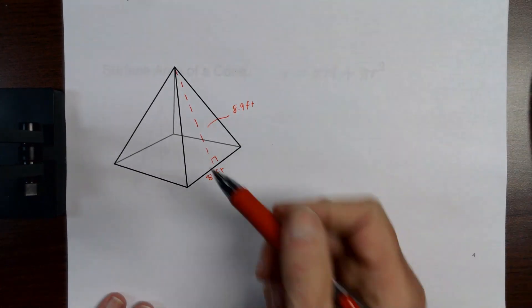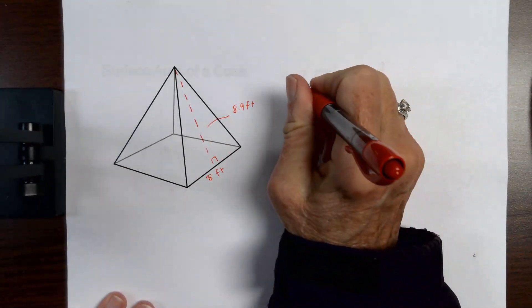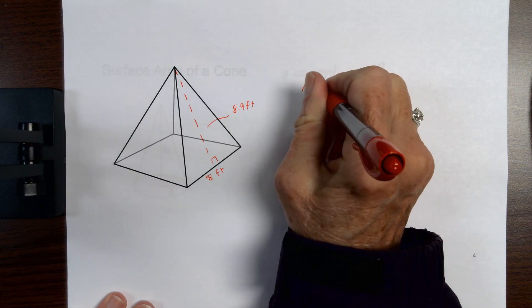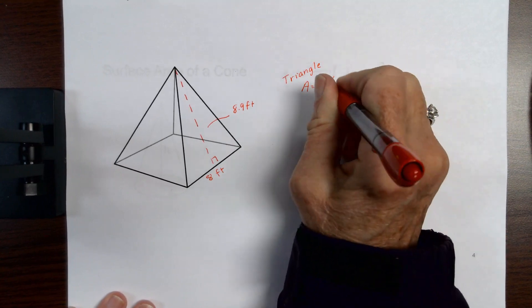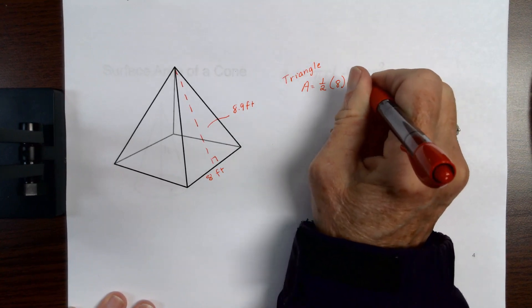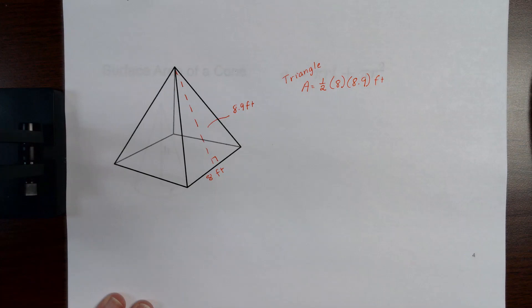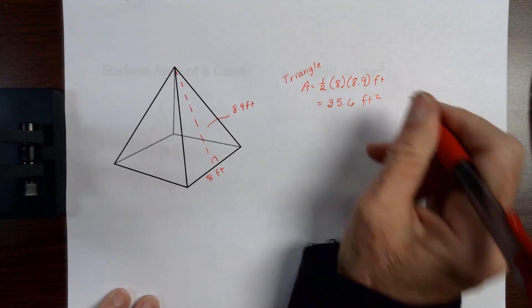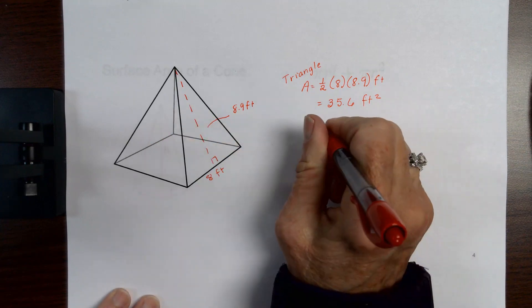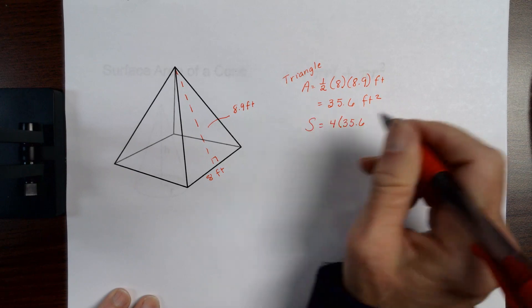On this next example, the triangle's base is eight and the triangle's height is 8.9 feet. So I have one half times eight times 8.9, and using a calculator that gives me 35.6 feet squared. But I have four of them, so I multiply four times 35.6. This will be my lateral area.